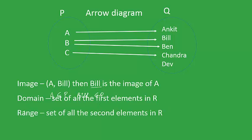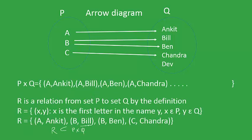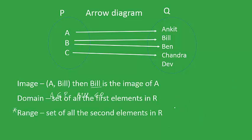Next is range, which is a very important concept that will be helpful in later chapters. The range is the set of all the second elements in R. When you form the set R, all the second elements — the elements coming from Q — are called the range of R. For example, going back to the previous slide, the second elements were Ankit, Bill, Ben, and Chandra. So the range of relation R is the set {Ankit, Bill, Ben, Chandra}.